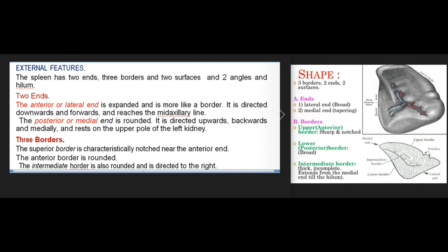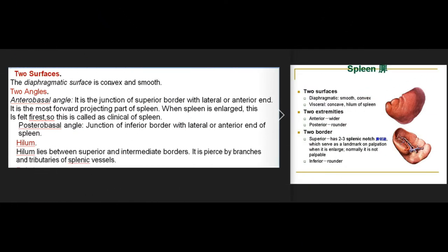Two ends: the anterior or lateral end is expanded and more like a border, directed downwards and forwards, reaching the midaxillary line. The posterior or medial end is rounded, directed upwards, backwards, and medially, resting on the upper pole of the left kidney. Three borders: the superior border is characteristically notched near the anterior end; the anterior border is rounded; the intermediate border is also rounded, directed to the right. The diaphragmatic surface is convex and smooth.